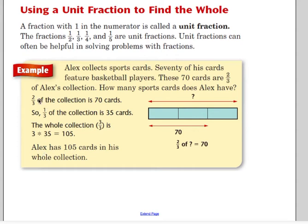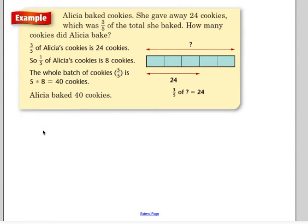So, in this situation, I didn't know what the whole was. I knew the part, but I didn't know the whole. I was trying to find that out. So, I had to divide by my numerator, and then I multiplied by my denominator. Let's take a look at another example. Alicia baked cookies. She gave away twenty-four cookies, which was three-fifths of the total she baked. How many cookies did Alicia bake? Well, we know that three-fifths of Alicia's cookies is twenty-four cookies. So, one-fifth of Alicia's cookies is eight cookies, because we take that twenty-four and divide by three. Now, the whole batch of cookies, which is five-fifths, would be five times eight, because we've got five groups of eight. So, five times eight is forty cookies. Alicia baked forty cookies.